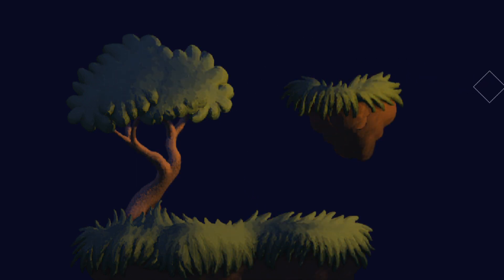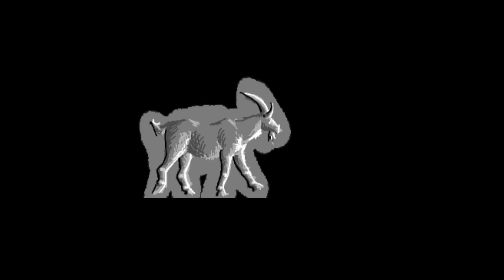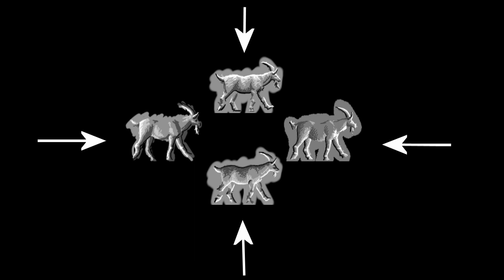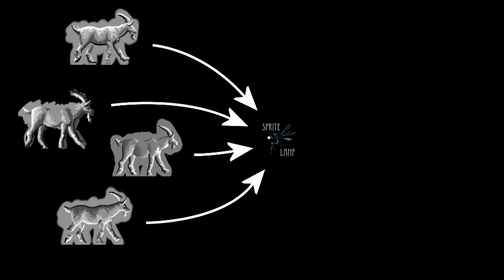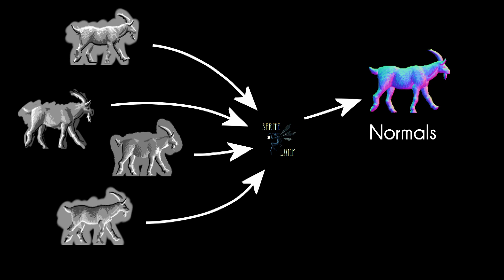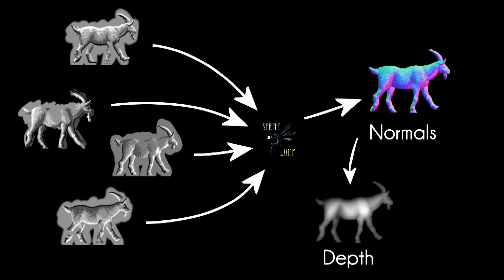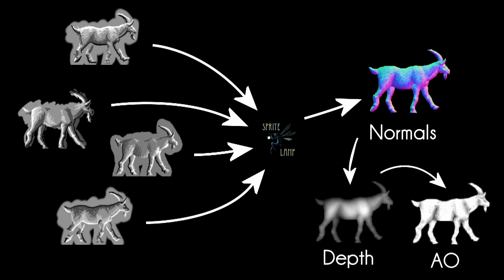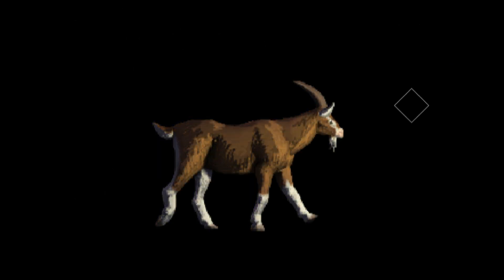SpriteLamp works by having the artist paint a number of lighting profiles. That's a colourless picture of the subject lit from a particular direction. You need at least 2 of them, and you can use as many as 5. The more you have, the rougher the input can be. In this example we're going to use 4. You pass these lighting profiles into SpriteLamp, and it generates a normal map from them. It can also generate depth maps and ambient occlusion maps. You hand these assets over to your game engine, and along with a diffuse colour map, it'll look something like this.